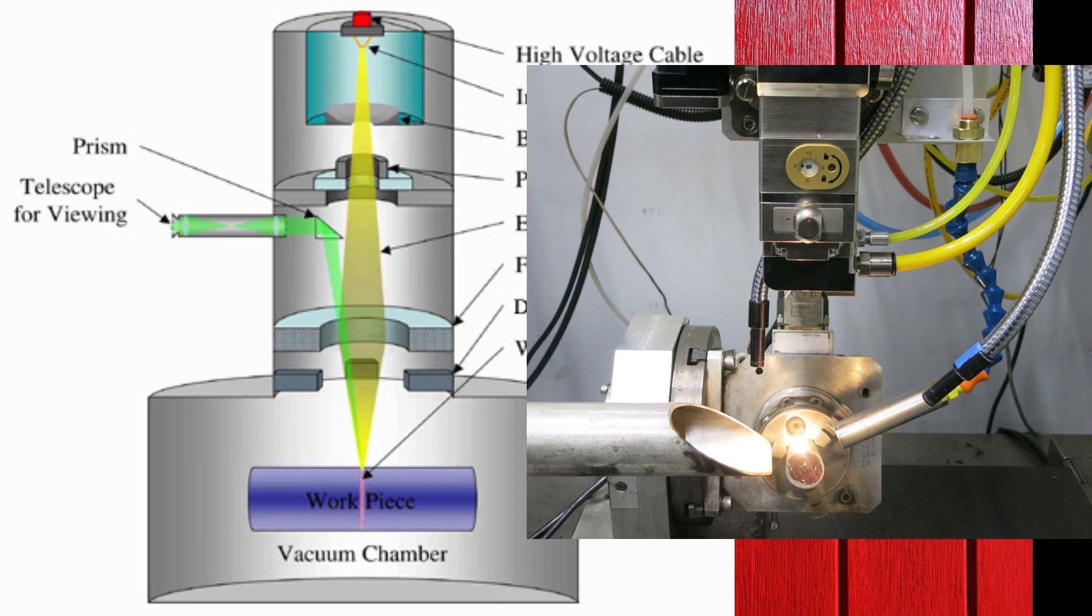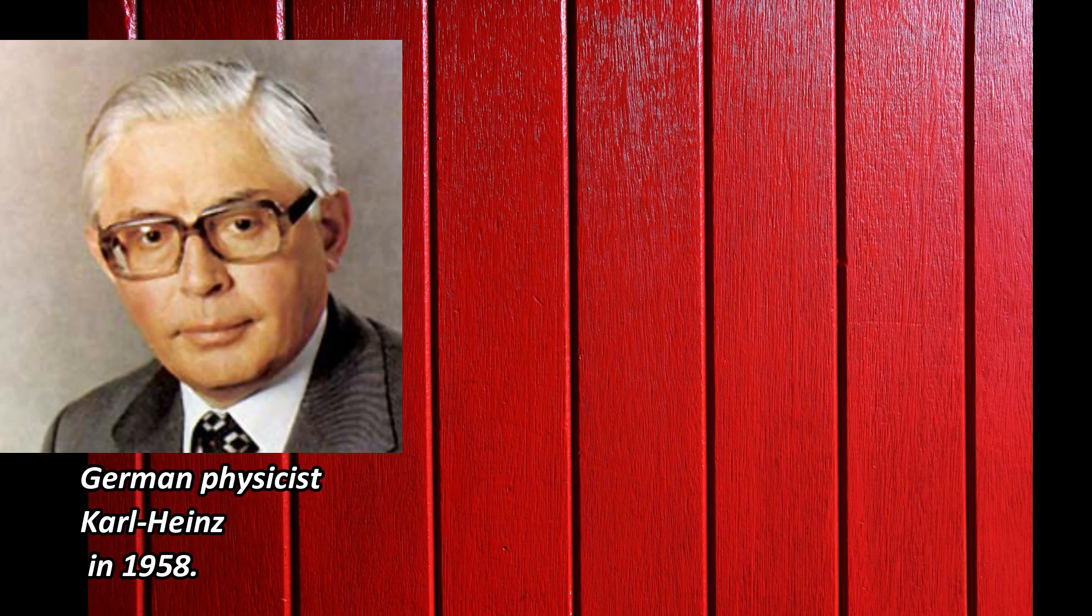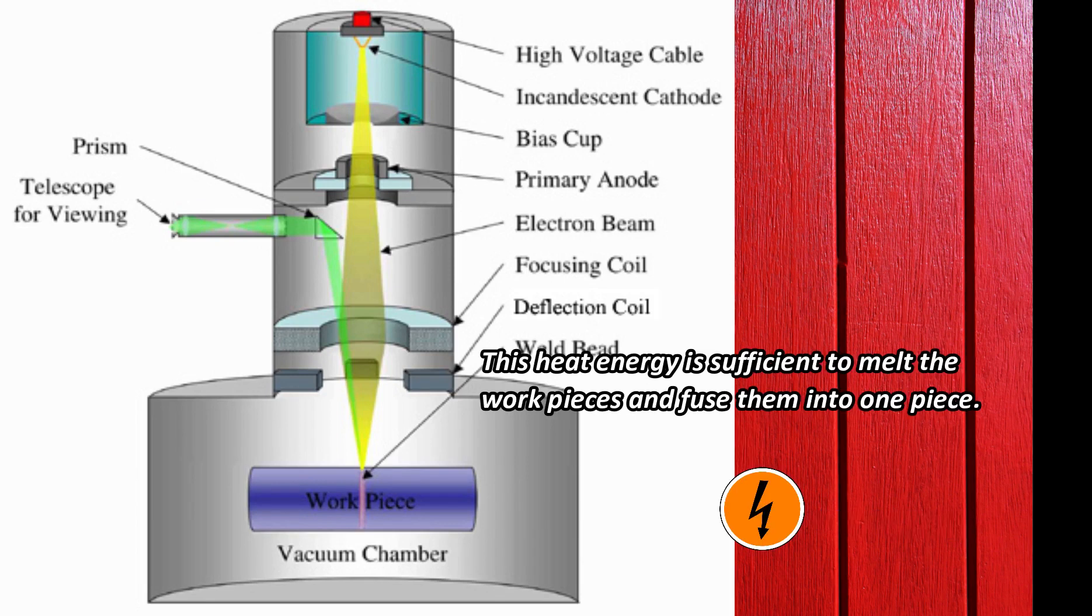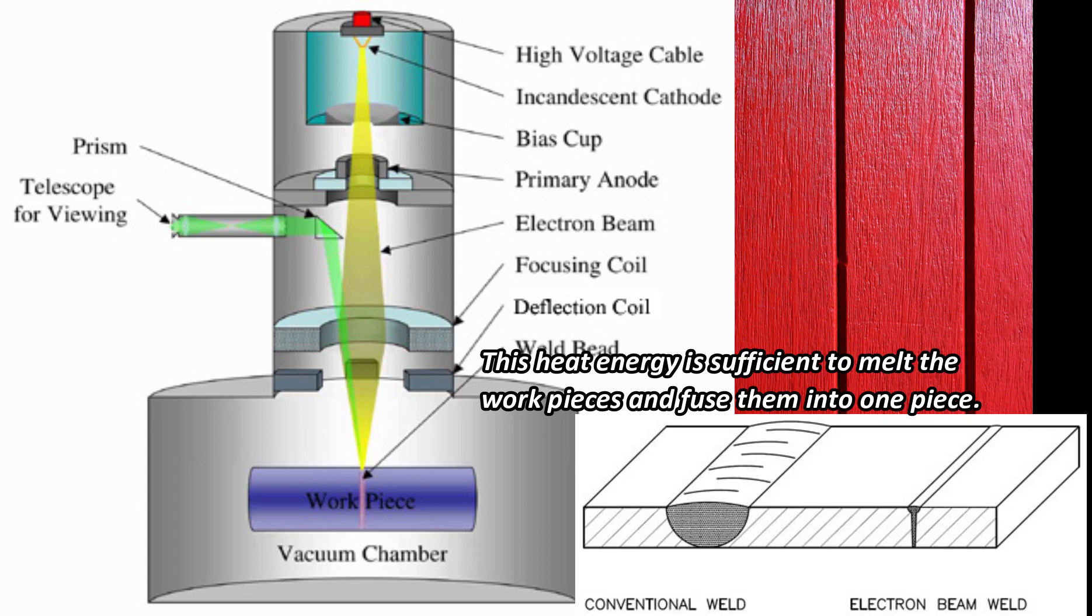This welding was developed by German physicist Karl Heinz in 1958. In this welding process, a high jet of electrons strikes at welding plates where its kinetic energy converts into heat energy. This heat energy is sufficient to melt the workpieces and fuse them into one piece.